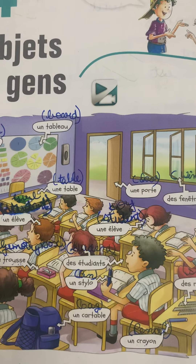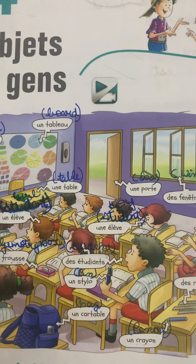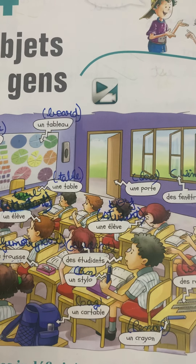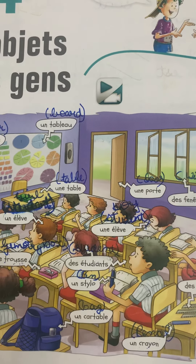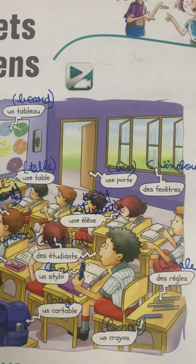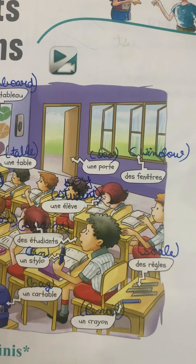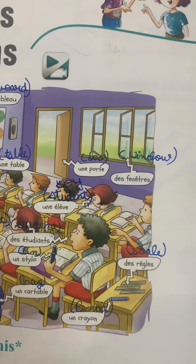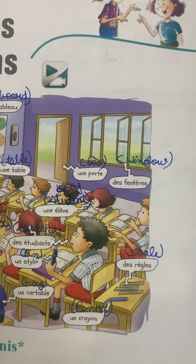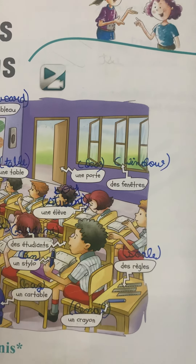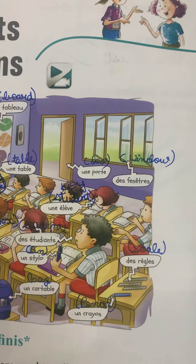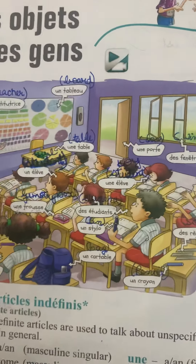Un stylo is a pen. Un cartable is a bag. Un table is a table. Un porte is a door. Des fenêtres are windows. Des règnes are a scale. Un crayon is a pencil.